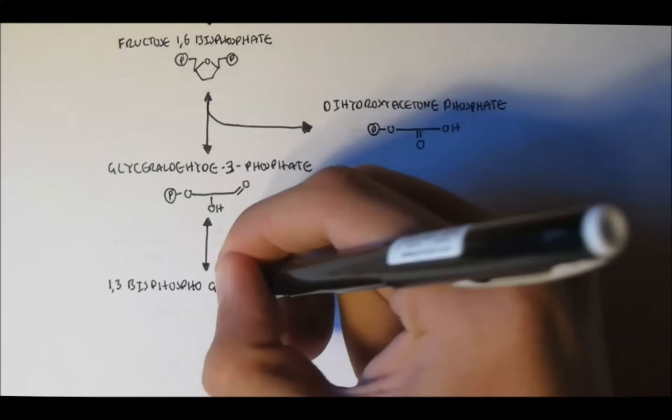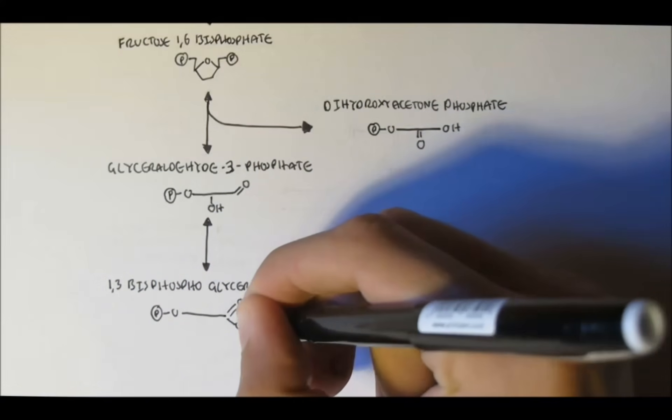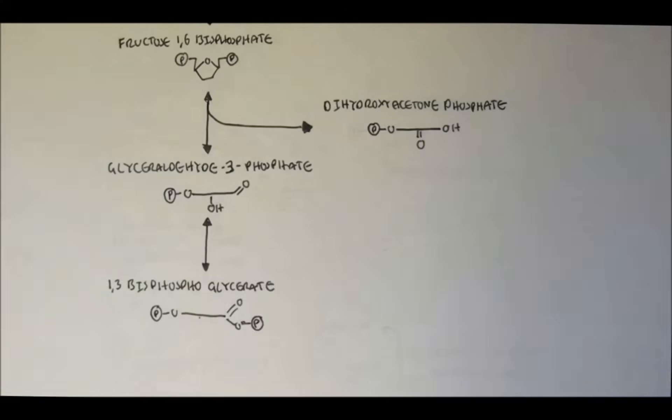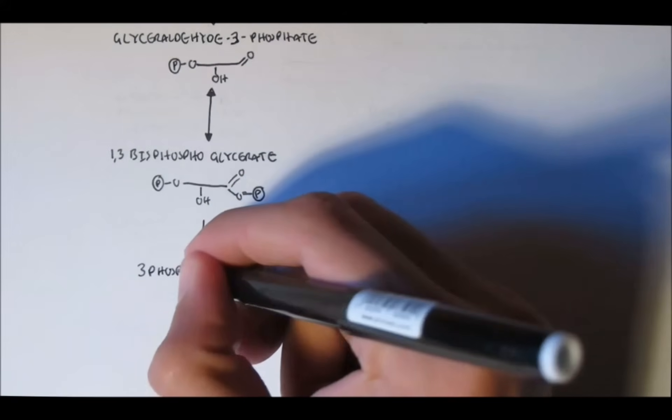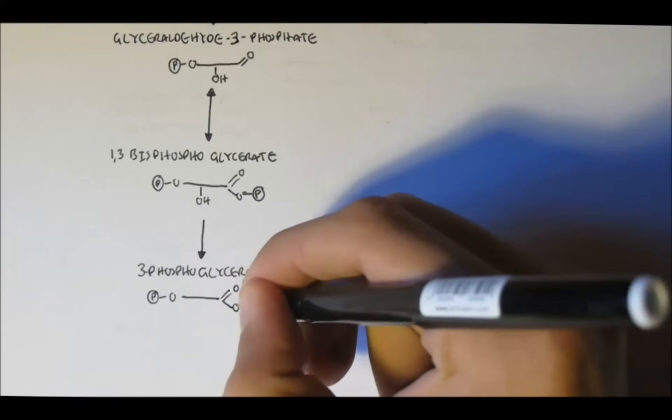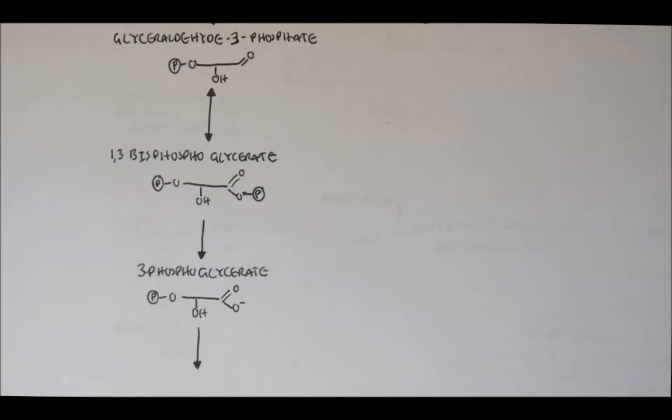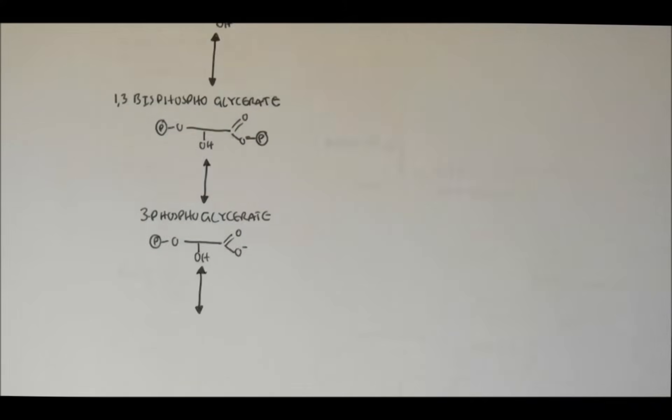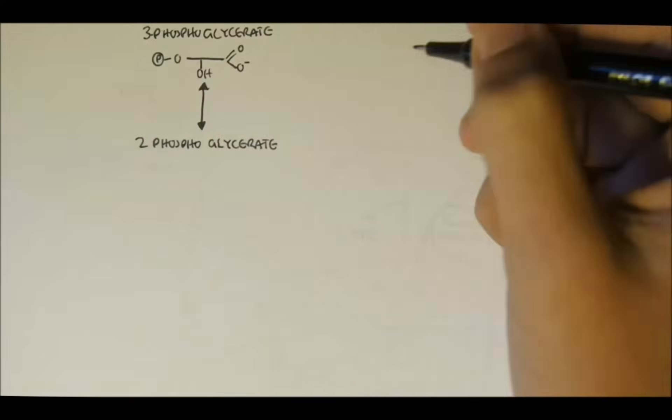So glyceraldehyde-3-phosphate will continue glycolysis and convert to 1,3-bisphosphoglycerate, with an addition of a phosphate to the first carbon. 1,3-bisphosphoglycerate will then dephosphorylate to become 3-phosphoglycerate, with the phosphate still remaining on the third carbon, but the phosphate of the first carbon has gone. So 3-phosphoglycerate will then convert to 2-phosphoglycerate. The phosphate of the third carbon has just changed positions and is now off the second carbon.